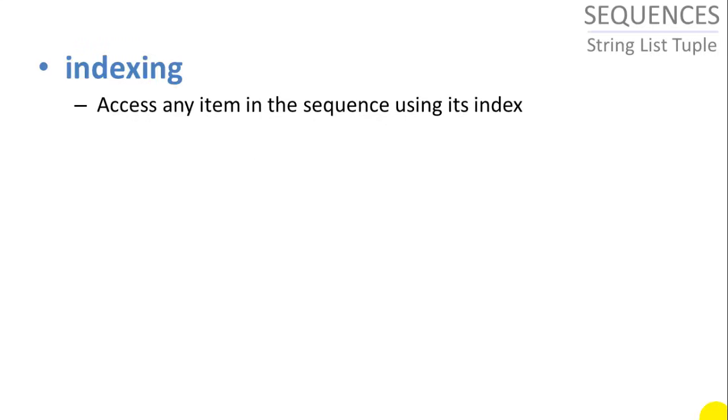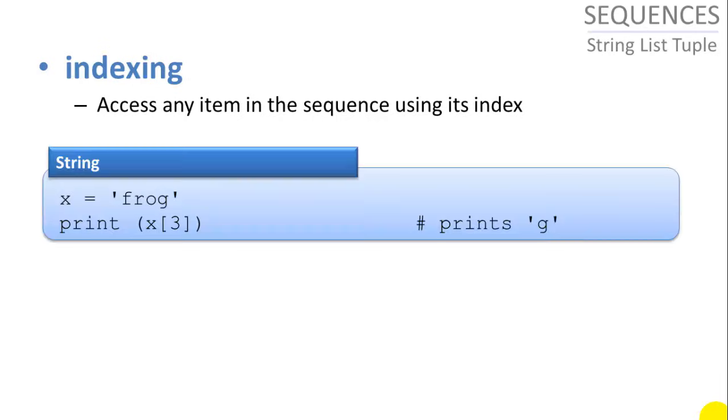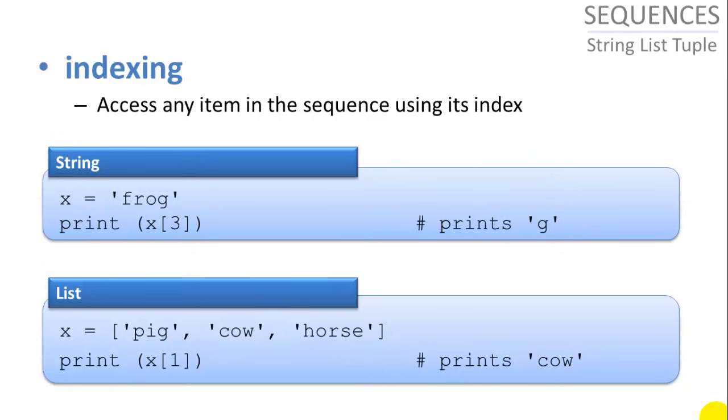So indexing, you can access any item in the sequence instantly using its index. If you have a million items in your list, and you want to access an item instantly, you can do that if you know its index. So a string is a sequence of letters. Let's say we want to access one of the items in the word frog. We can say print x of three using the square brackets for the three, and that gives us the third index. Starting from index zero for f, the g is going to be index three.